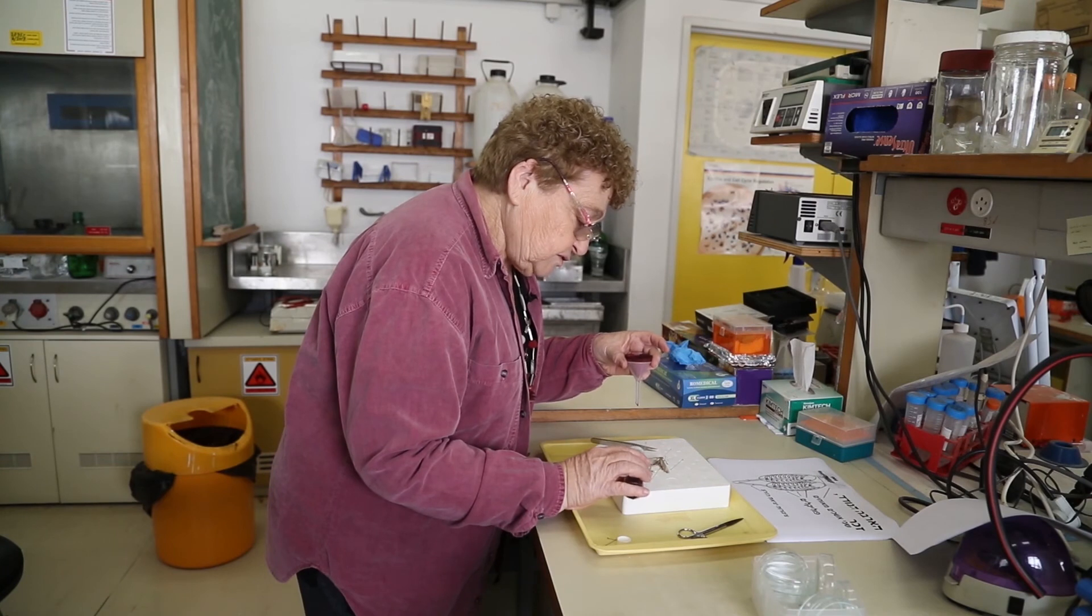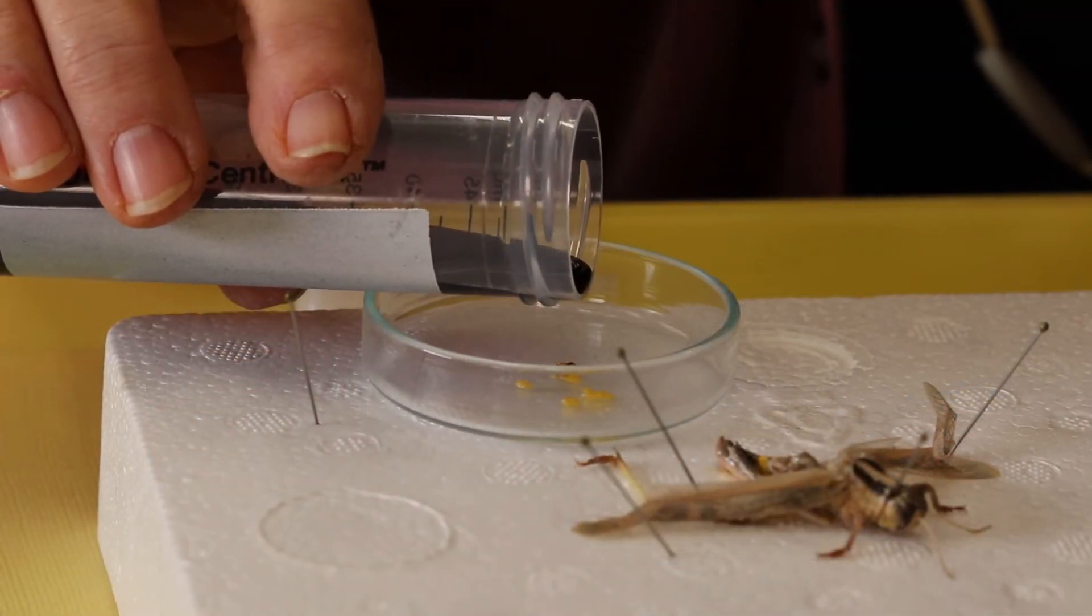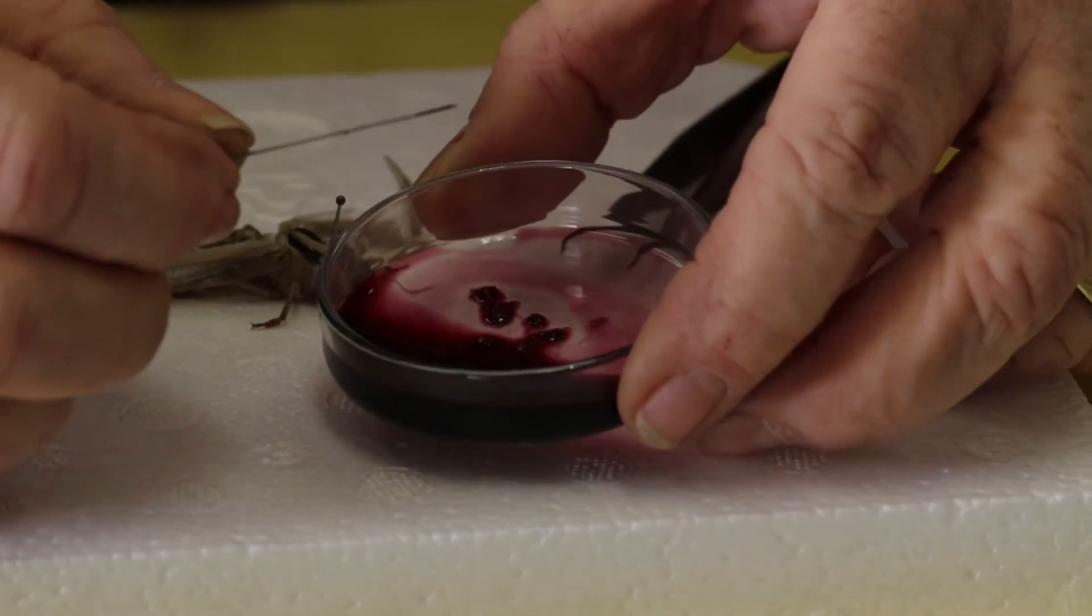She is now transferring the testicles into aceto-orcein, a dye that fixes the cells, dissolves the cytoplasm and stains the nuclei red.